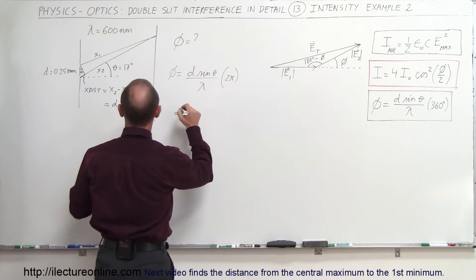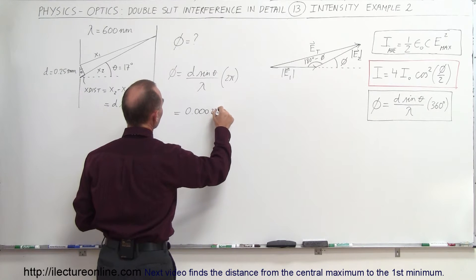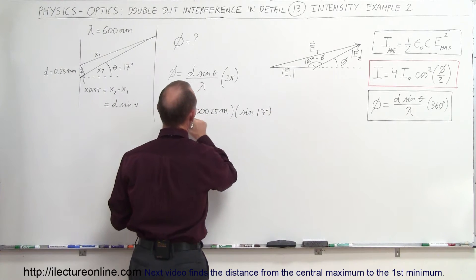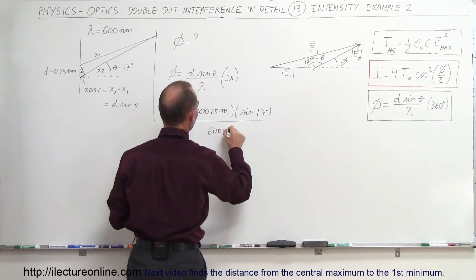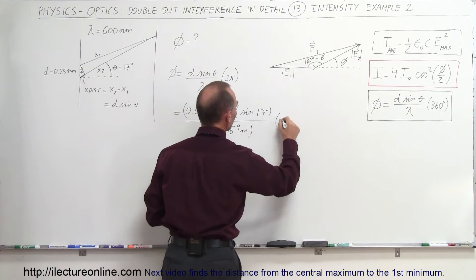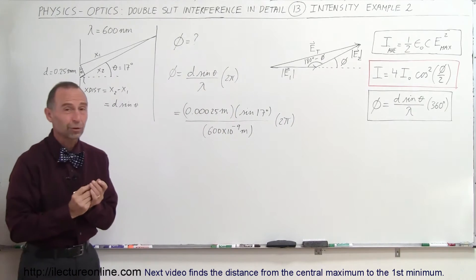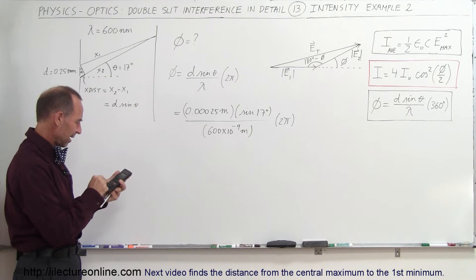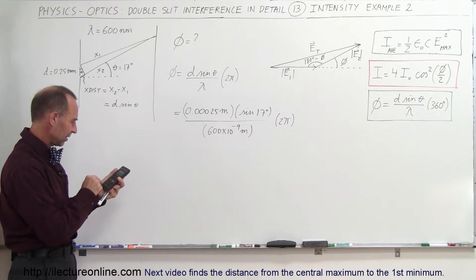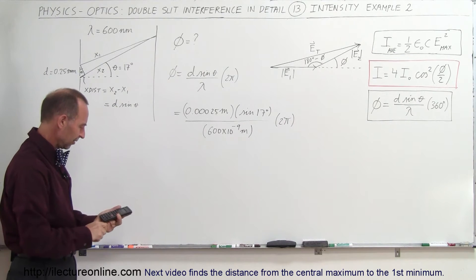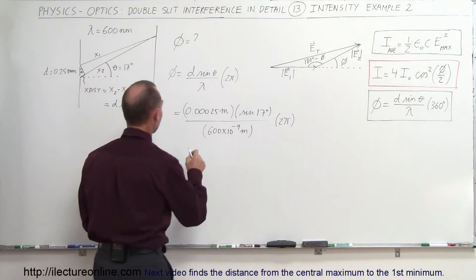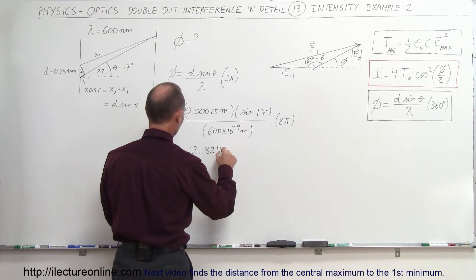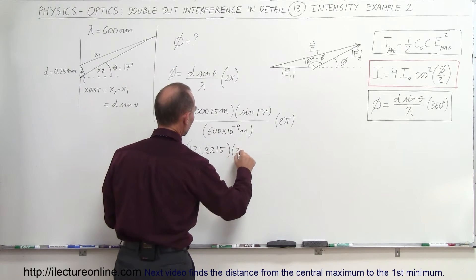For D we get 0.00025 meters, because we want to convert it to meters, times the sine of 17 degrees, and we divide the whole thing by lambda, which is 600 nanometers, 600 times 10 to the minus 9 meters, and then we multiply that times 2 pi radians, which is the number of radians for a complete phase of the wave. So that gives us 0.00025 times the sine of 17 divided by 600 times 10 to the minus 9, and that's 121.8, so this is equal to 121.8215...